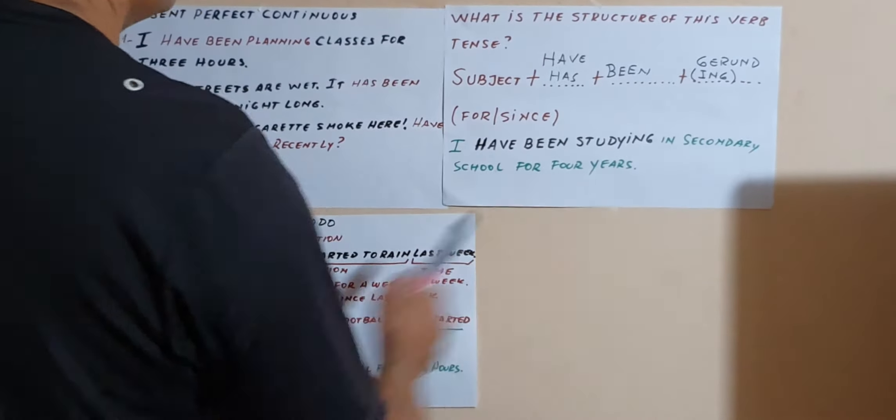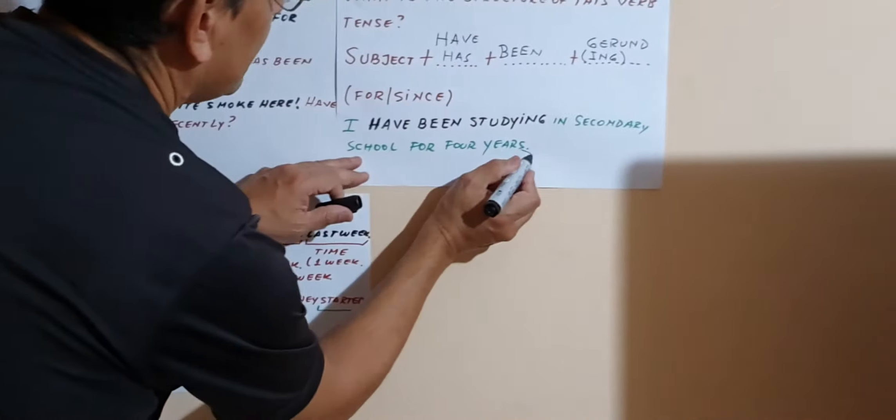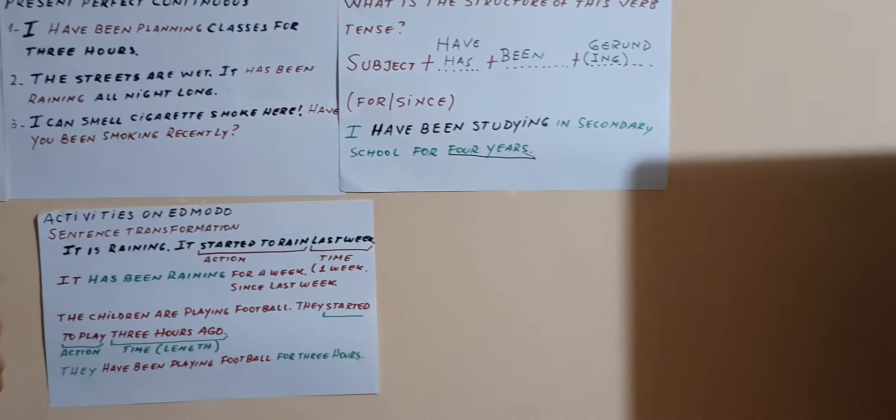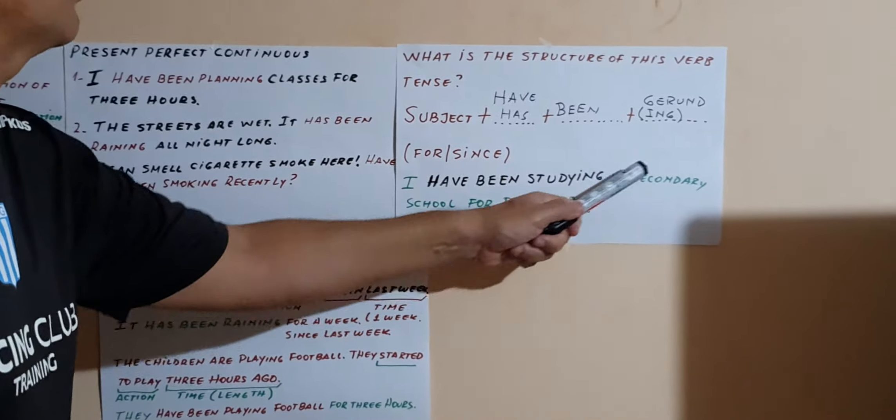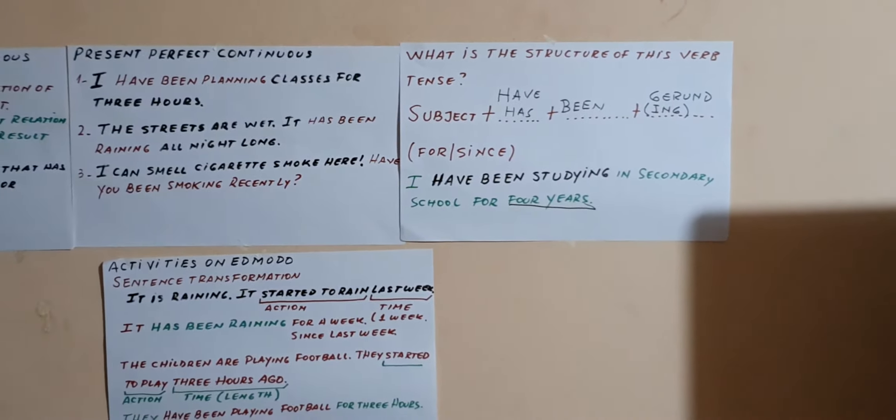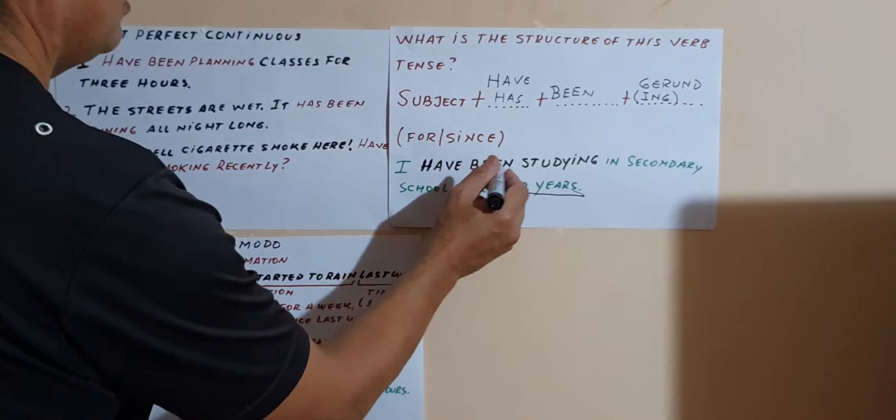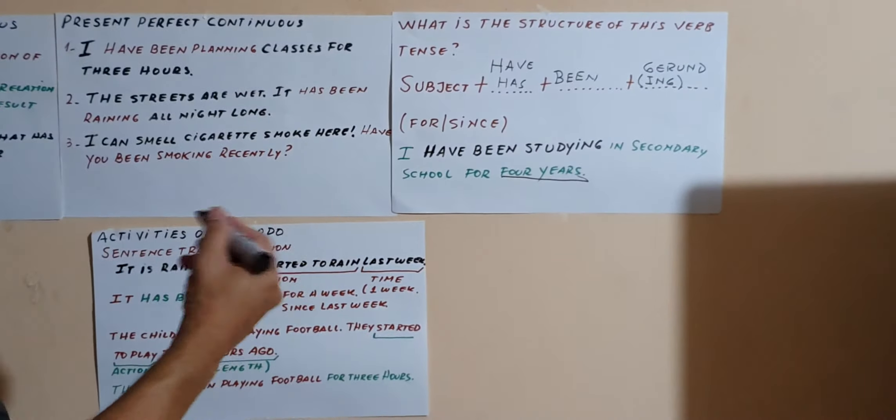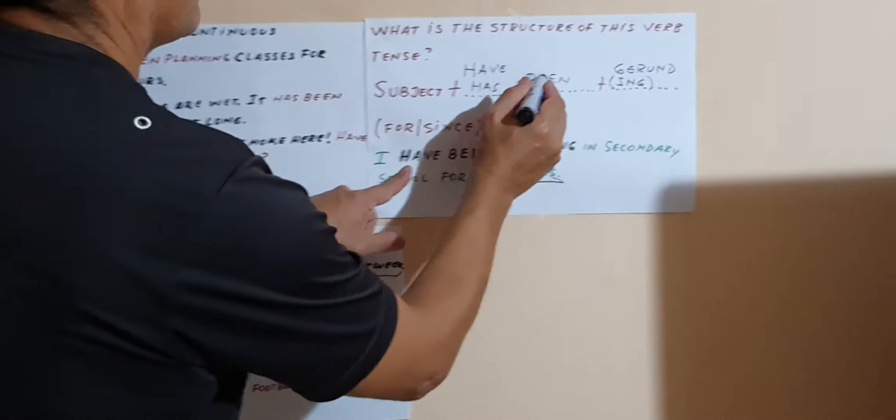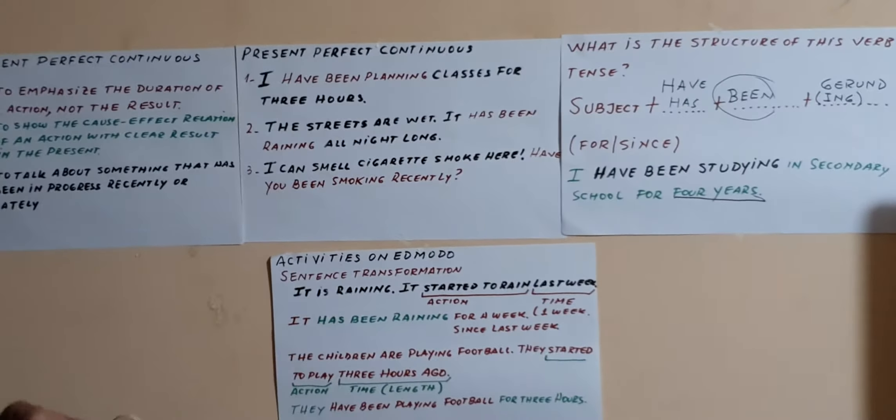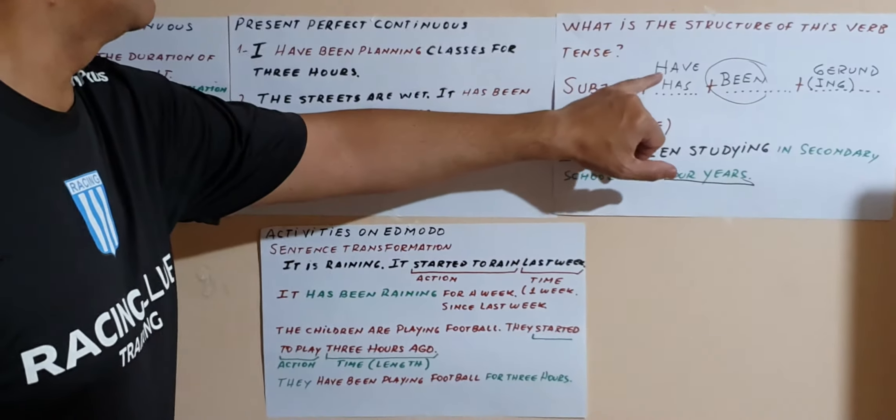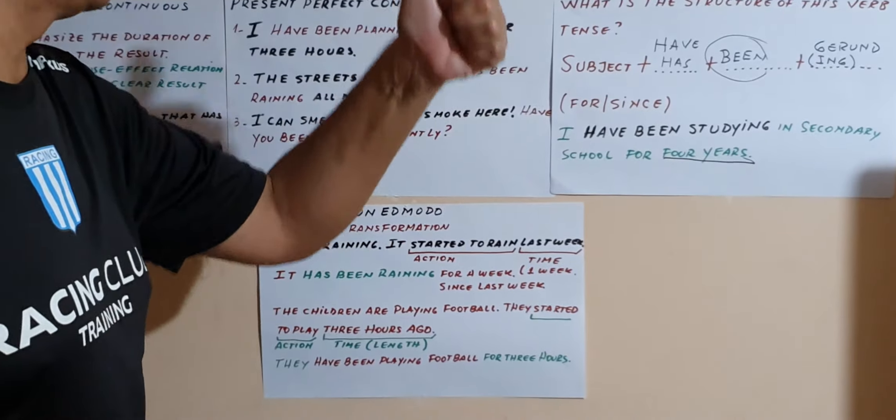Subject plus have/has been and the gerund. Podemos poner for or since, si, como en este caso pusimos también en algunas oraciones. For example: I have been studying in secondary school for four years. You are emphasizing the duration. Hace cuatro años que vienen estudiando en el secundario.